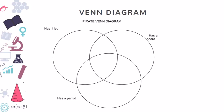Let's take a look on this Venn diagram. There are three circles because there are three categories. The first category is the pirate has one leg, has a parrot, has a beard.